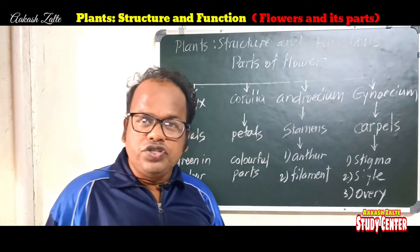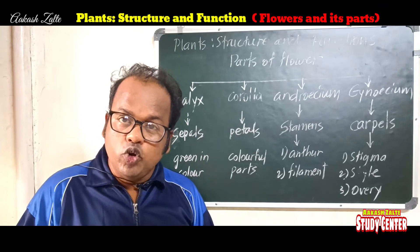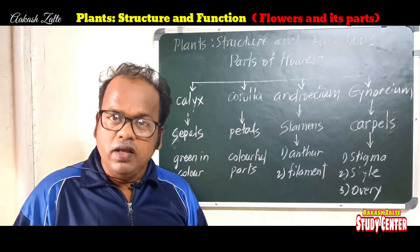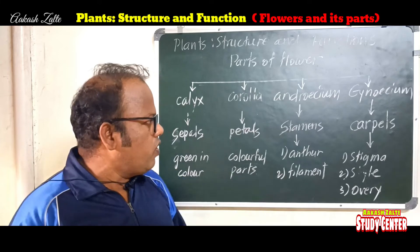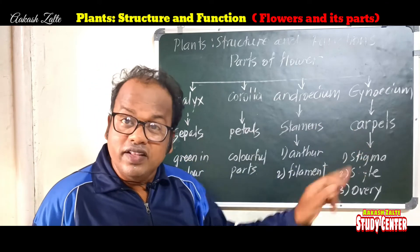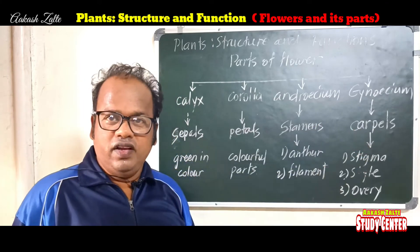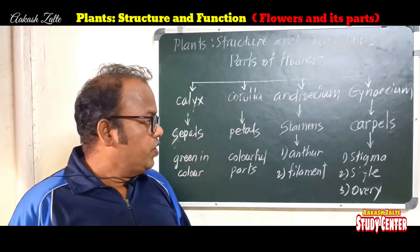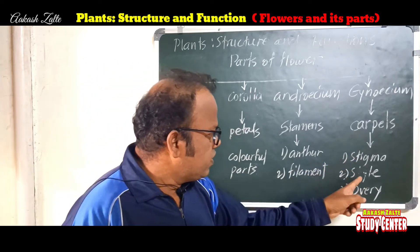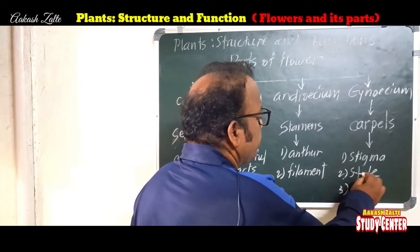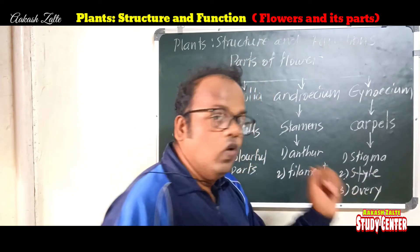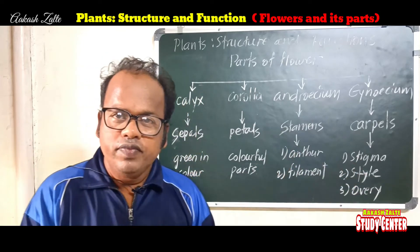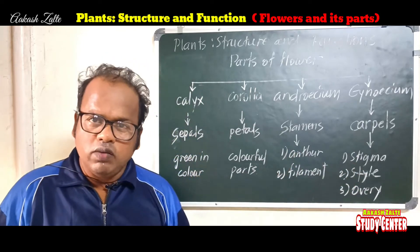Gynosium is the female reproductive part of any flower. Gynosium is made up of carpels. Carpel consists of three units: stigma, style, and ovary. Now let's study them one by one — calyx, corolla, androsium and gynosium.